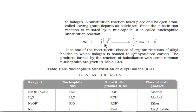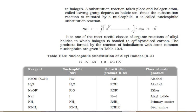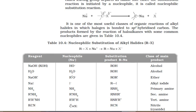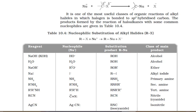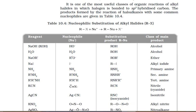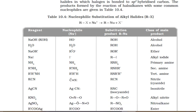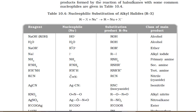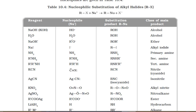In alkyl halides, the carbon is in an sp3 hybridized state, and the bond is cleaved as the nucleophile attacks. On the basis of mechanism, nucleophilic substitution reactions can be divided into two categories: SN1 and SN2. Before proceeding, let's discuss the various nucleophiles involved.